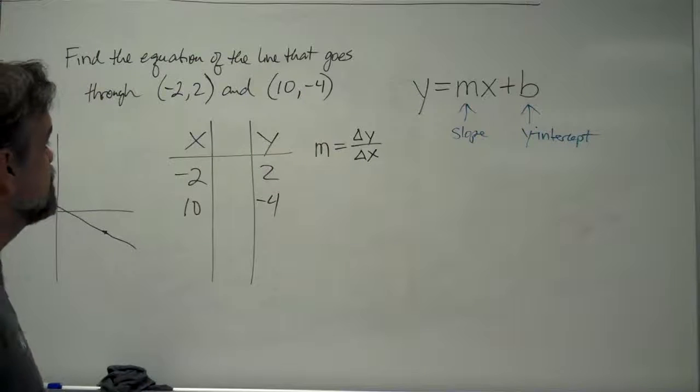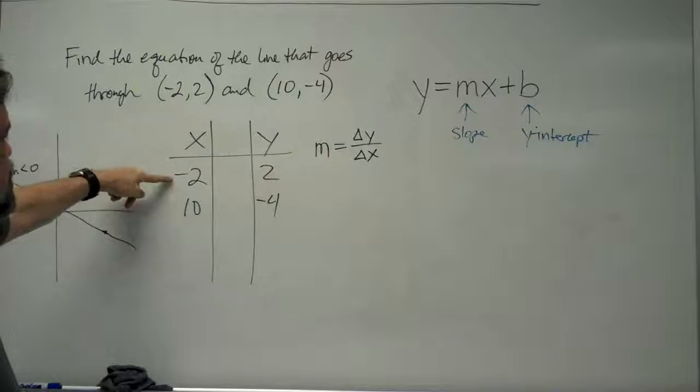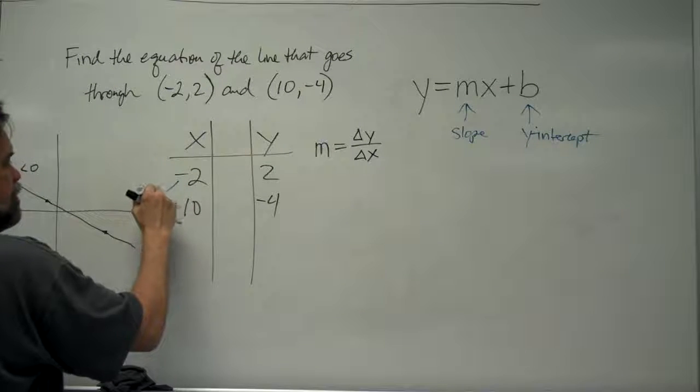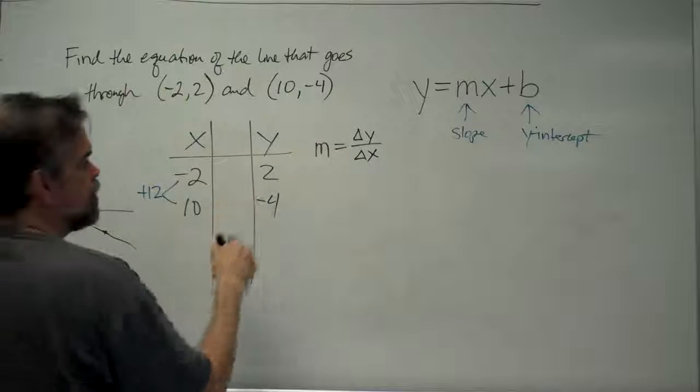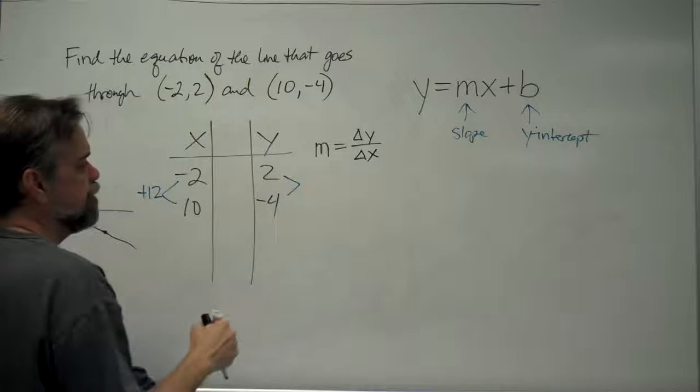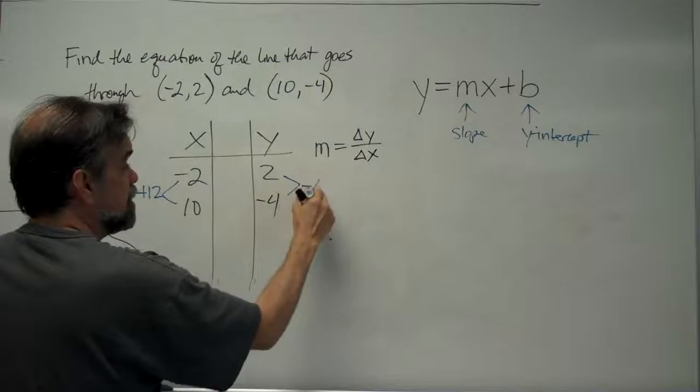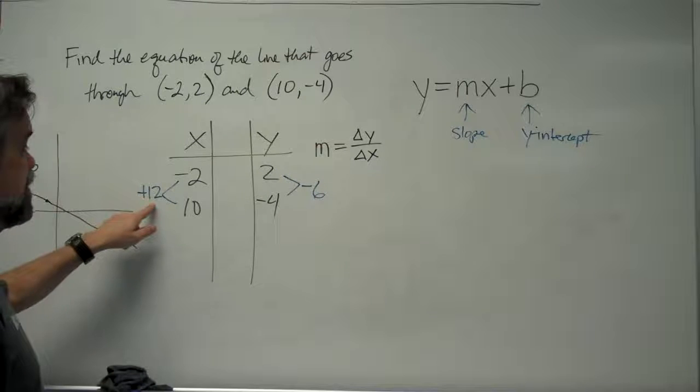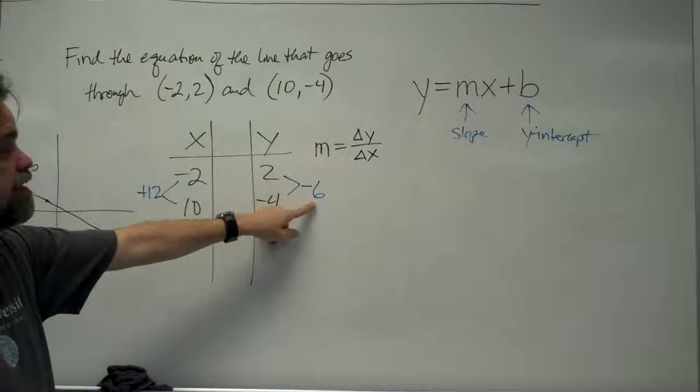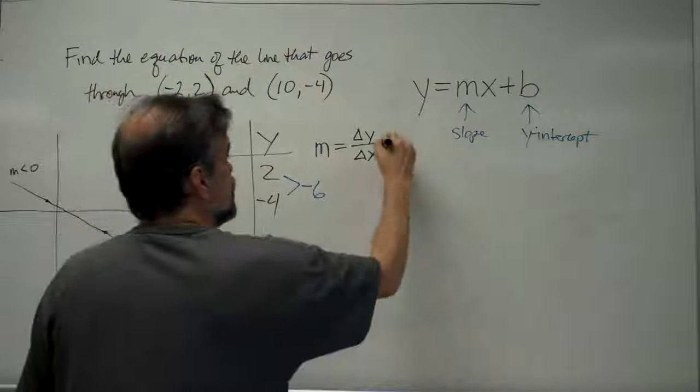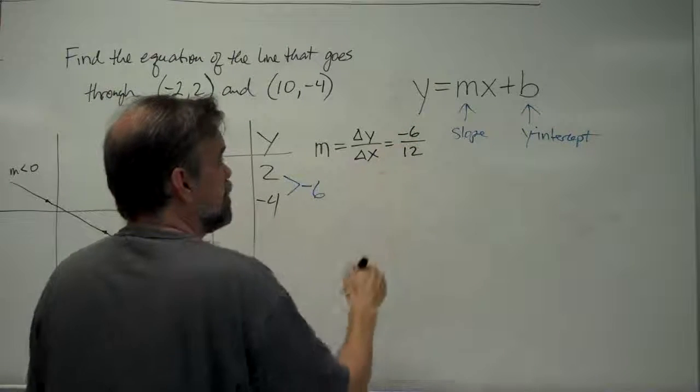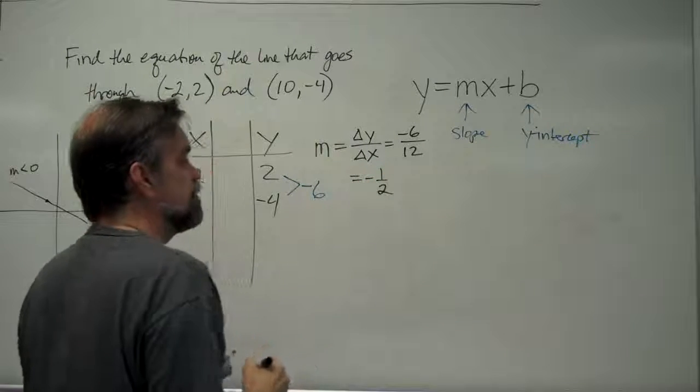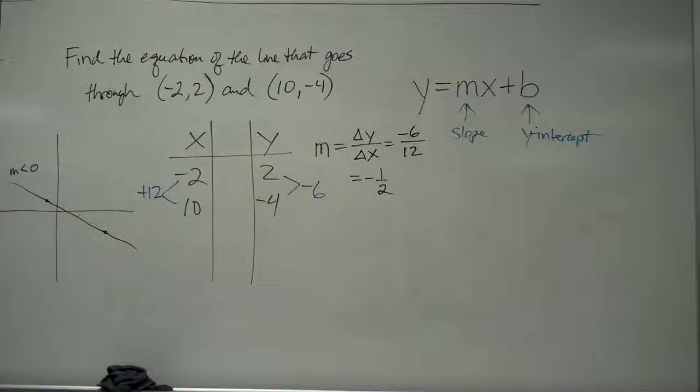So, let's look at those differences. What happened to our x's here? We went from -2 to 10. Well, that's an increase of 12. (-2) plus 12 is 10. And what happened to our y's? We went from 2 to -4. That's a decrease of 6 because 2 minus 6 is -4. So, our change in x is positive 12, our change in y is negative 6. So, this is going to be -6 over positive 12, and I believe I can reduce that to be -1/2. So, the slope of my line is -1/2.